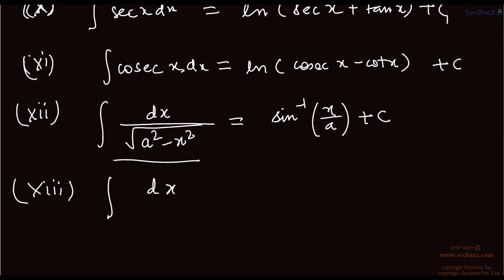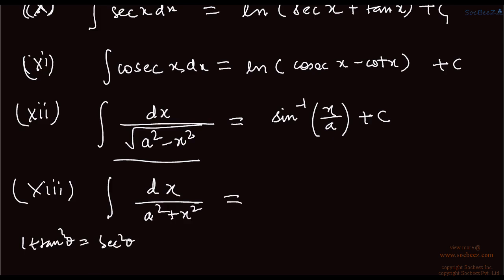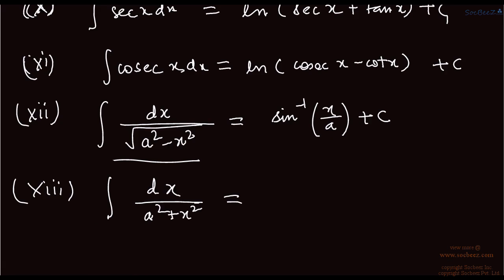The thirteenth formula: the integral of dx upon (a² + x²). In this case, we use the identity 1 + tan²θ = sec²θ, so we put x = a tan θ. The denominator simplifies and you get 1/a times tan inverse (x/a). Remember: in the sine inverse case there is no 1/a, but in every other case you will have 1/a.